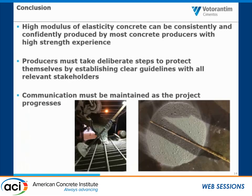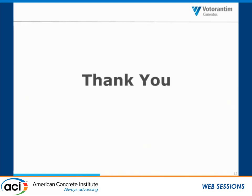In conclusion, high modulus of elasticity concrete, especially in the Chicago market, can be consistently and confidently produced by most concrete producers with high-strength experience. With the exception of the higher modulus values — 7 million, 7.25 million — these can reasonably be achieved most likely with current high-strength concrete mix designs. That being said, producers must take the lead and take deliberate steps to protect themselves by establishing clear guidelines and open lines of communication with the relevant stakeholders. Communication must be maintained both on a day-to-day level during pre-design and during actual placement. Thank you.